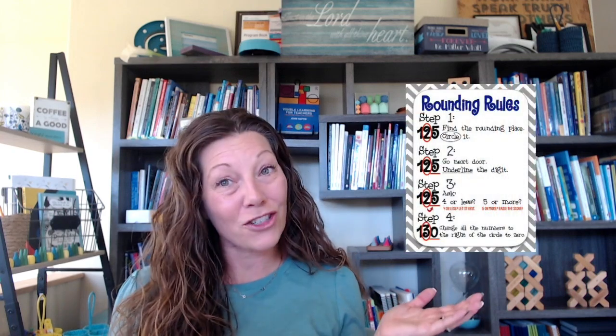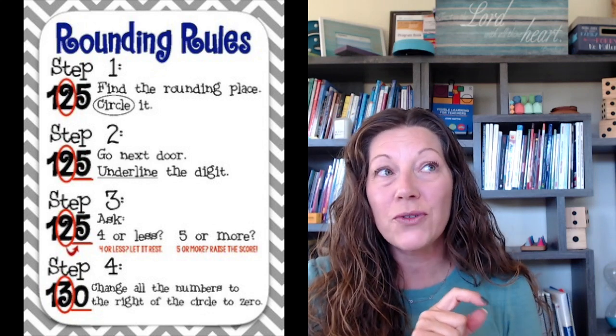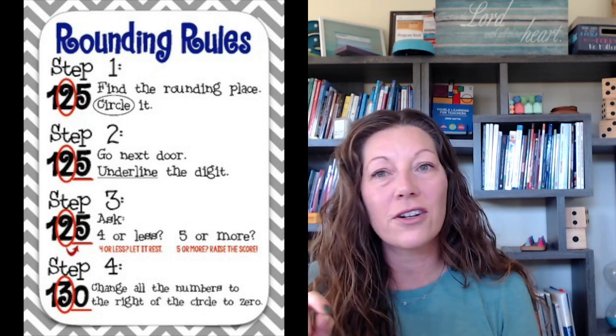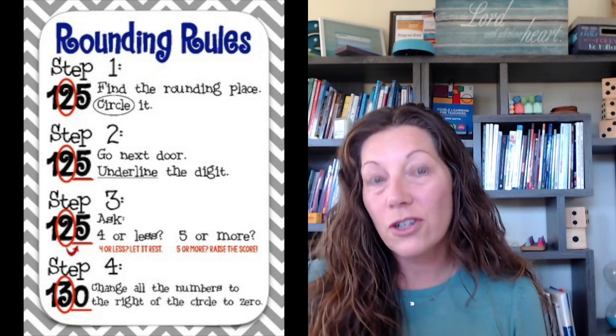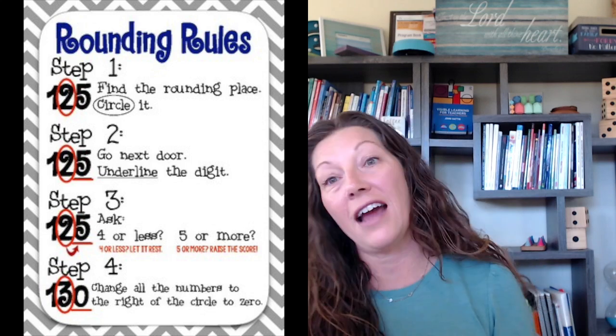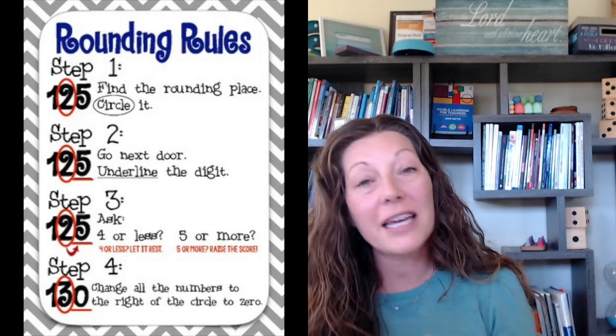I know that rounding is usually taught as a place value concept, but I no longer really see it that way. I used to teach my students exactly like these anchor charts. For those of you listening instead of watching the video, I'll give you basically the summary. It's typically those procedures that we've all done — you have them find the place they're trying to round to and underline or circle it. So if it's the tens place, they underline the digit in the tens place. Then you look next door, and if it's five or greater, they add one more. If not, it stays the same.